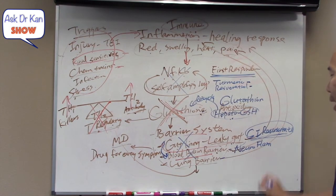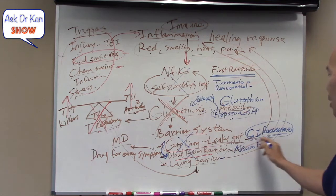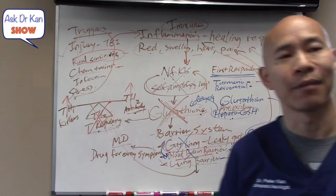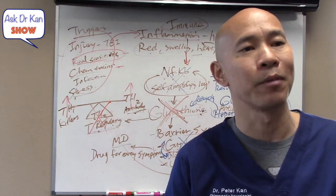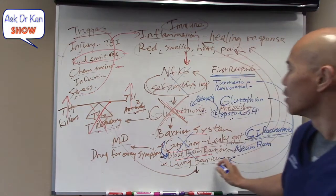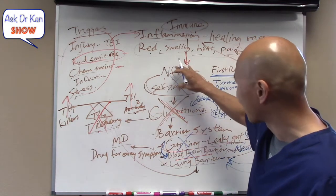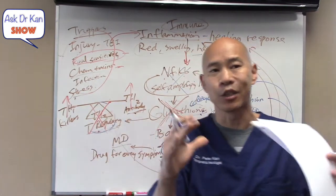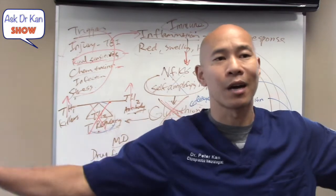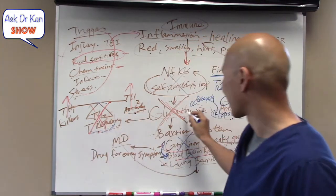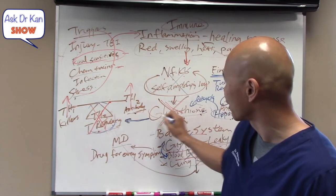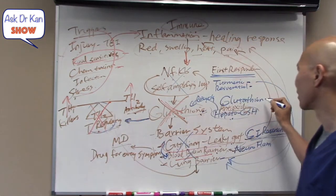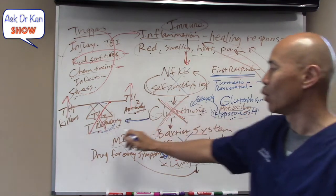For the lung barrier, if you have a problem there, you've got to fix the underlying inflammatory condition — which starts with leaky gut — and glutathione, turmeric, and resveratrol can help as well. If there's any type of chronic infection in the lung, we may do a pathogen cleanse. At the T regulatory cell level, glutathione is really important for T regulatory cell function, so taking liposomal glutathione or Hepato-GSH can improve function there.